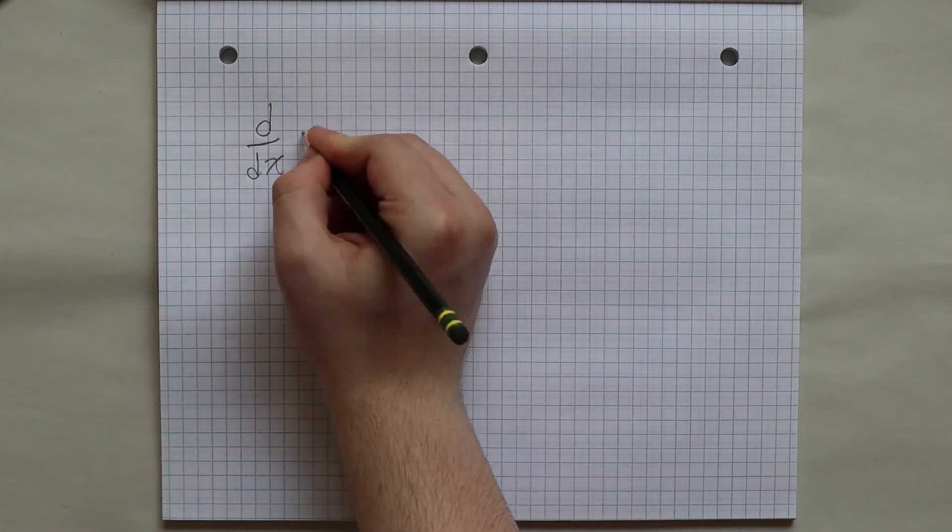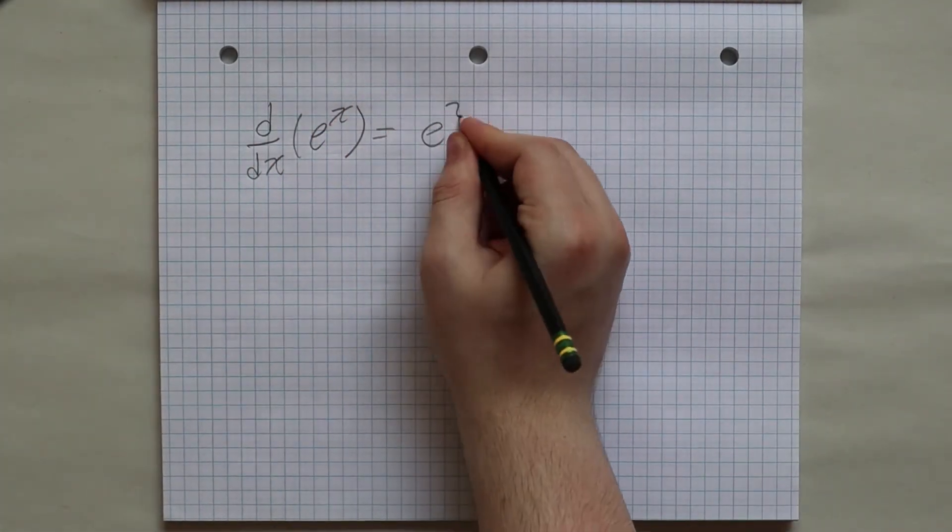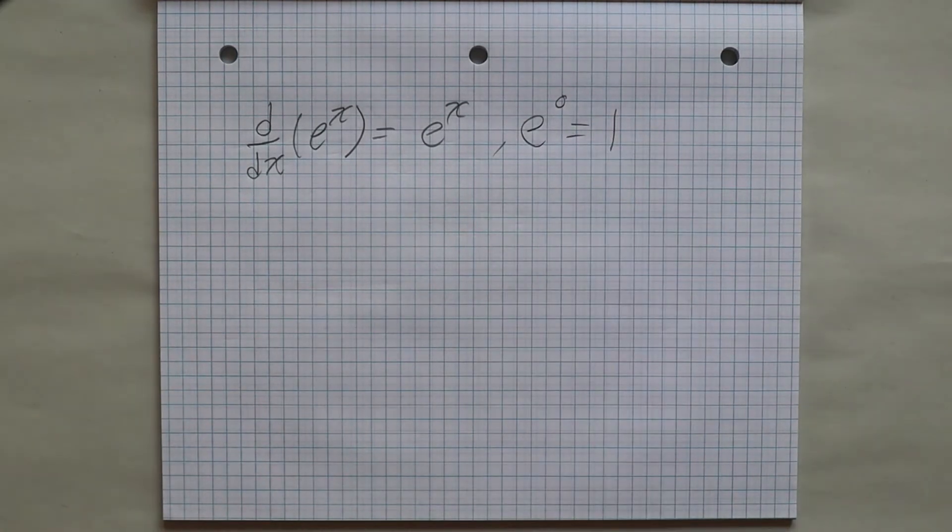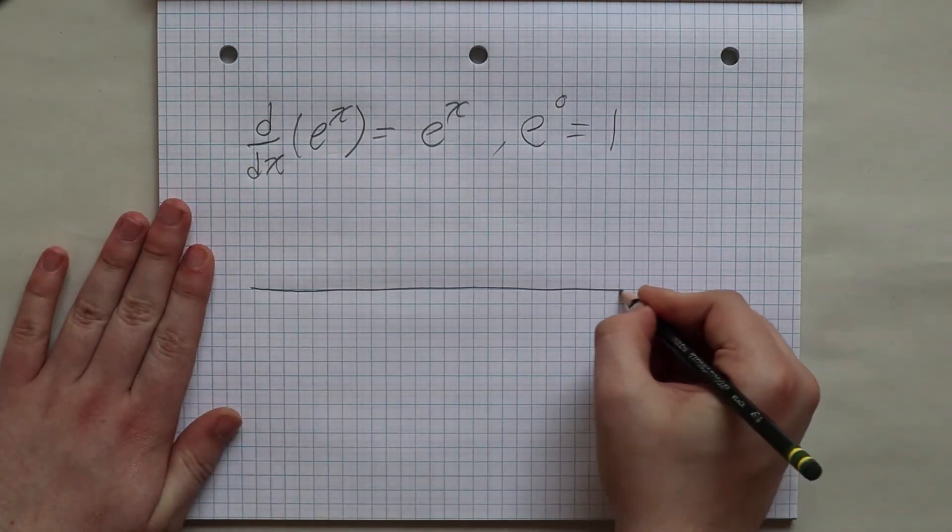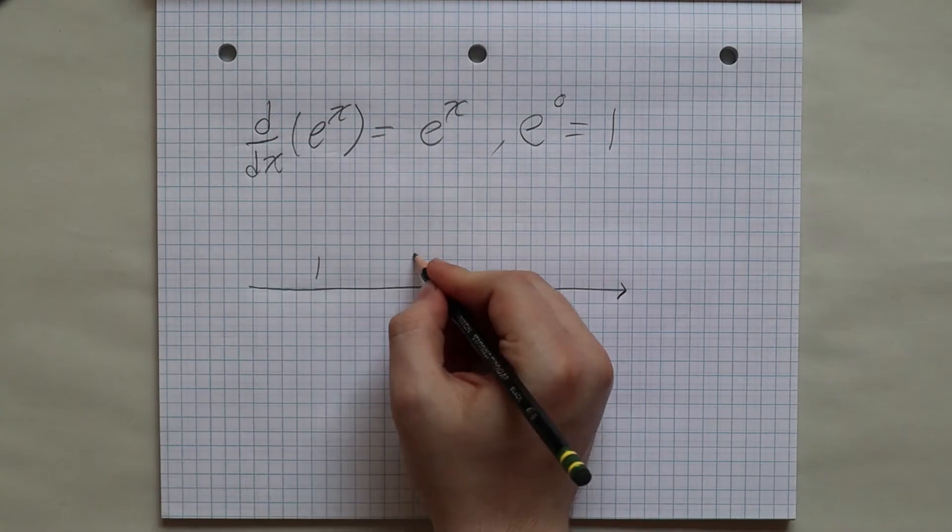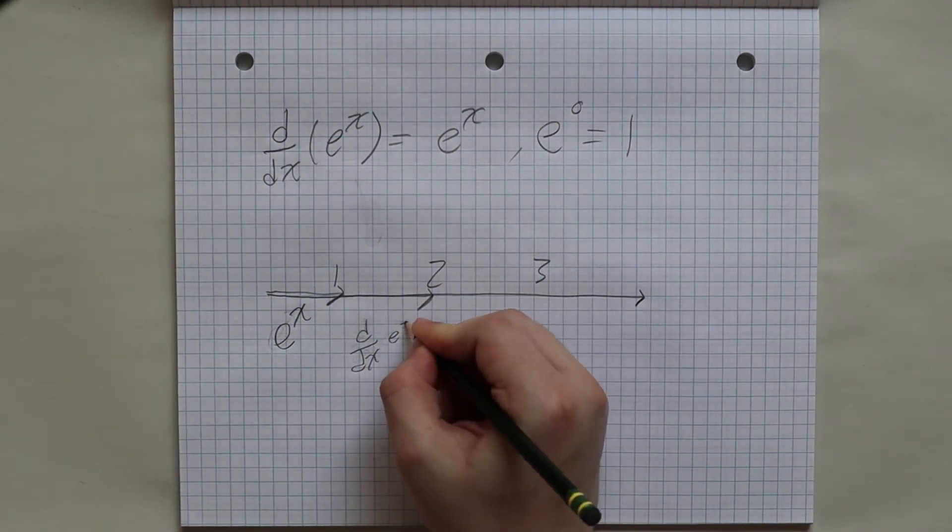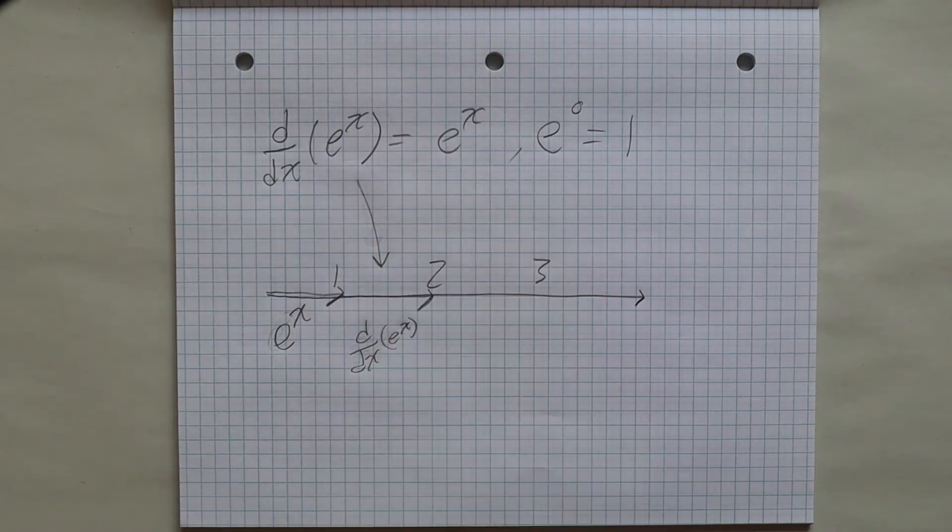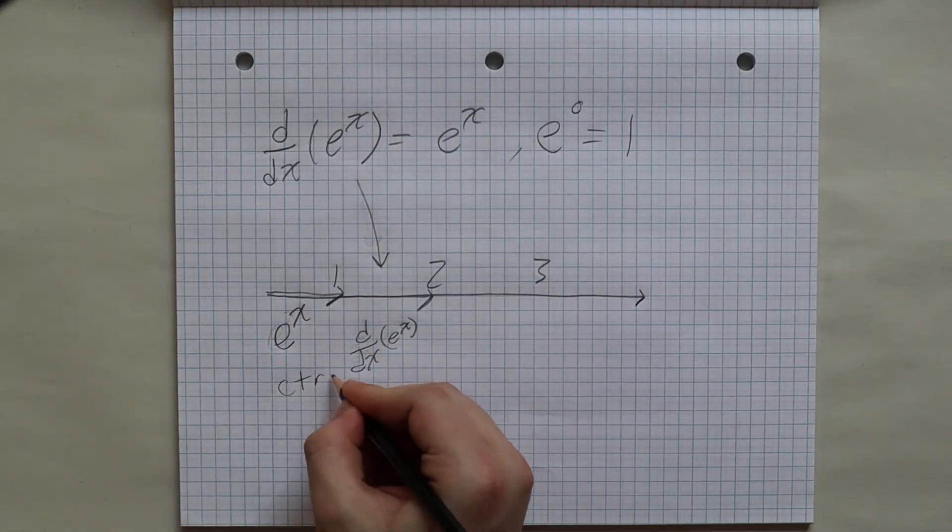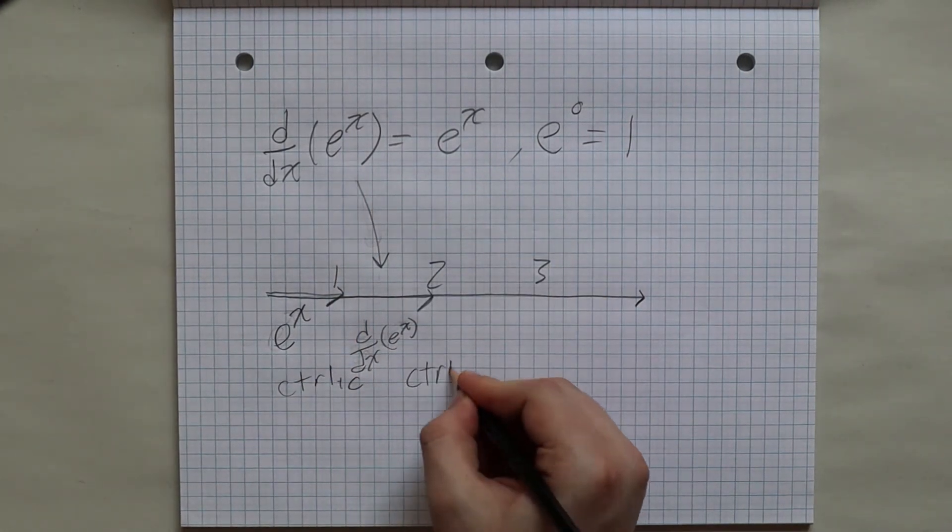We all know that the derivative of e to the x is e to the x and e to the 0 is equal to 1. This can be visualized by saying that e to the x is a displacement vector and its derivative is a velocity vector attached to the end of that displacement vector. And since its derivative is equal to itself, the velocity vector is just the same as the displacement vector.